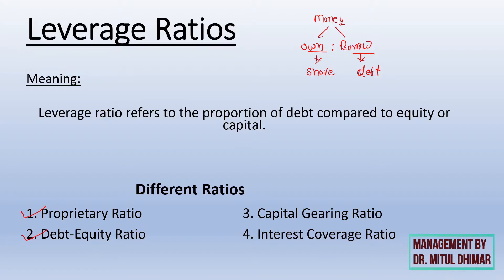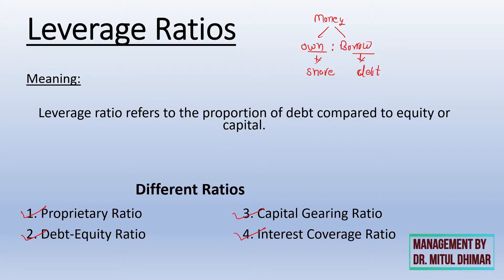There are four important ratios under this head: proprietary ratio, debt equity ratio, capital gearing ratio, and interest coverage ratio. Let us go through them one by one.